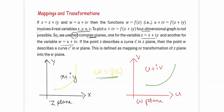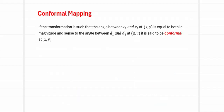Now we will see what happens in conformal mapping. If the transformation is such that the angle between curve 1 and curve 2 at any point (x, y) is equal — both in magnitude as well as sense — to the angle between curves d1 and d2 at (u, v), then the mapping is said to be conformal at (x, y).